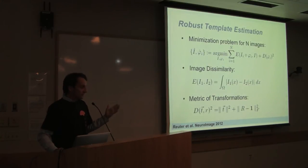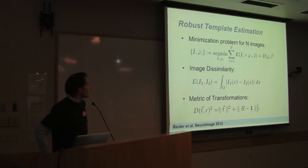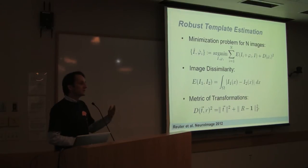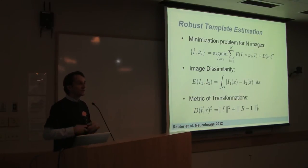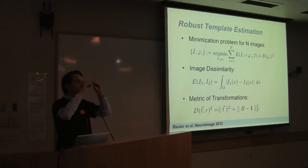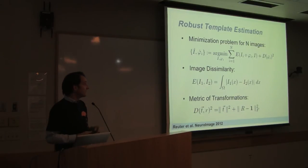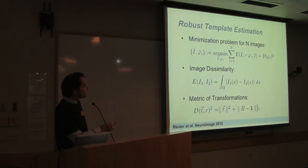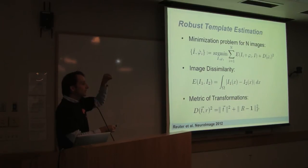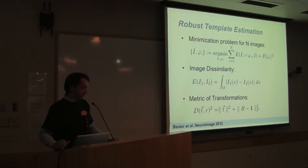We can extend this framework to the N time point case. When you have more than two images, we need to register all of them into some kind of mid-space. The equations behind this essentially find a mean image — an average of all these images — and the transforms that map each individual image to that average, done by minimizing a cost function.